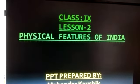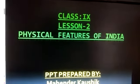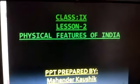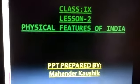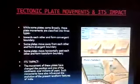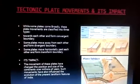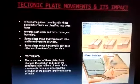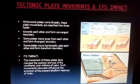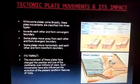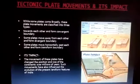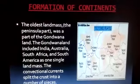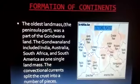Hello students, Class 9. Today we will start Chapter 2 of Geography — Physical Features of India. First, you should see these tectonic plates, which changed the formation of Earth. There are three types: convergent boundary, divergent boundary, and transform boundary.